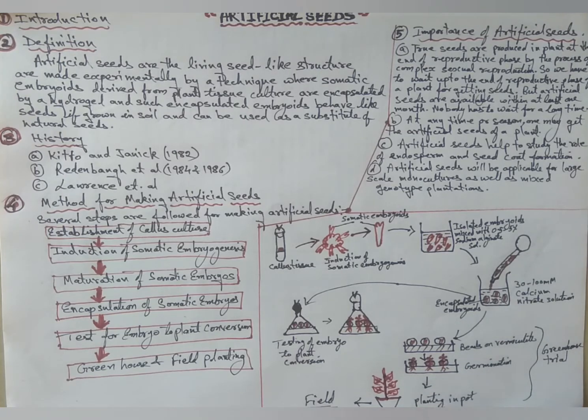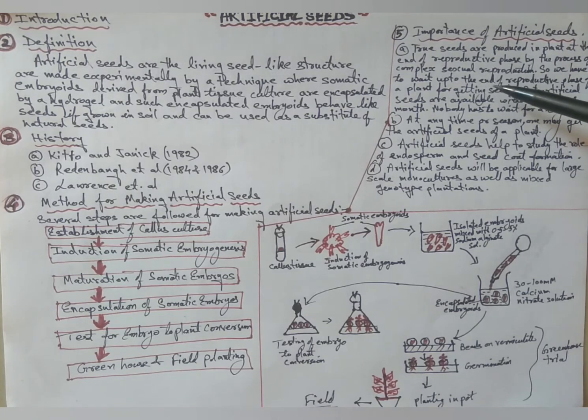Importance of artificial seeds: First, true seeds are produced in plants at the end of reproductive phase by the process of complex sexual reproduction, so we have to wait up to the end of reproductive phase of a plant for getting seeds.